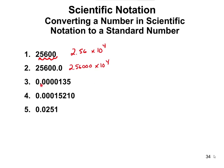For the next number, it's a smaller number — less than one — so we know the exponent is going to be negative. We have to move the decimal point 1, 2, 3, 4, 5 times, so that's going to be 1.35 times 10 to the negative 5.